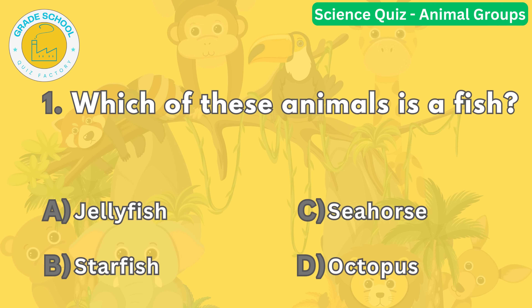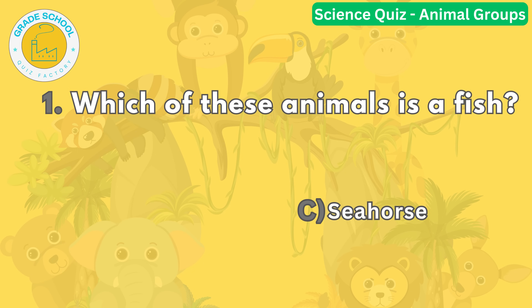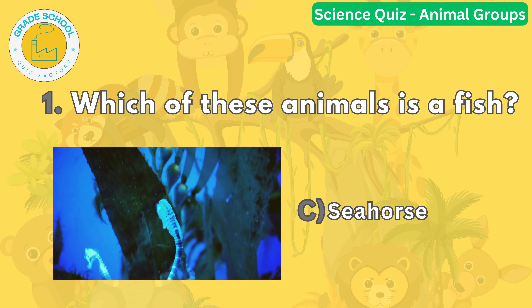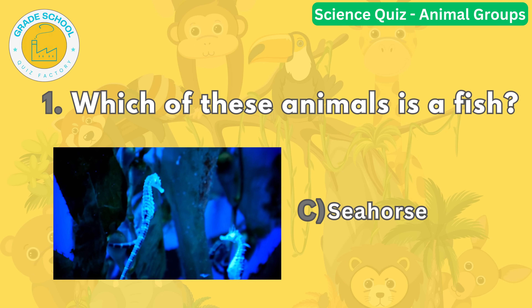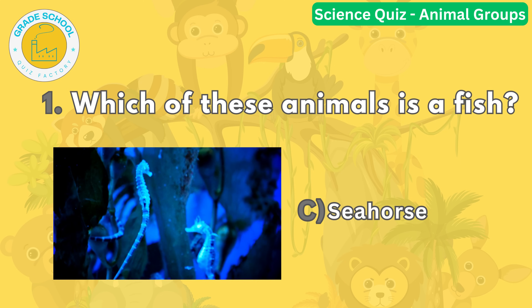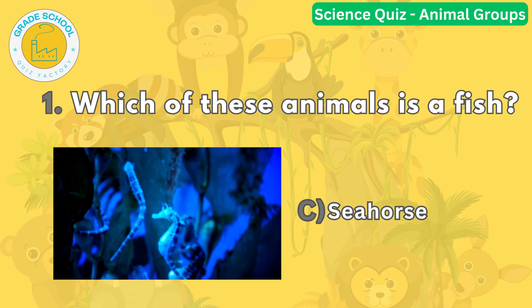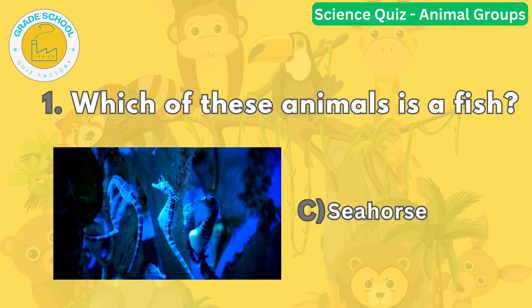Question number one. Which of these animals is a fish? The correct answer is letter C, seahorse. Fish are vertebrates that live in water and breathe with gills. Seahorses are fish that have bony plates instead of scales and can change their color to blend in with their surroundings.